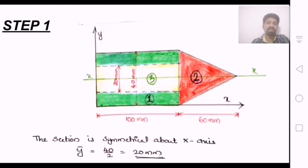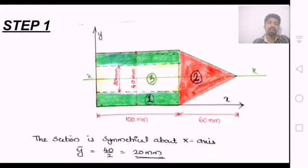The section is symmetrical about the x-axis, so y-bar equals 40 by 2, which is 20 mm. The total diameter of the cylinder is 40 mm, so the radius is 20 mm.